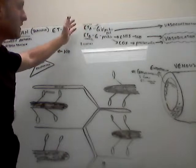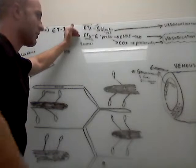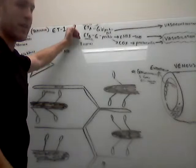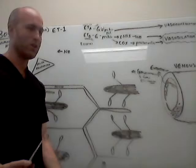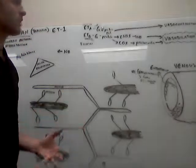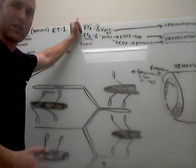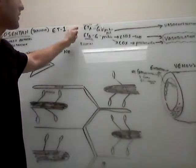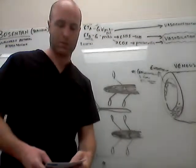Now, granted, ETB actually causes vasodilation, so in a sense it's kind of doing two things: one's vasodilation, one's vasoconstriction. But ultimately, what this prevents by being a competitive antagonist is it prevents this vasoconstriction from occurring from the ETA receptors being bound.